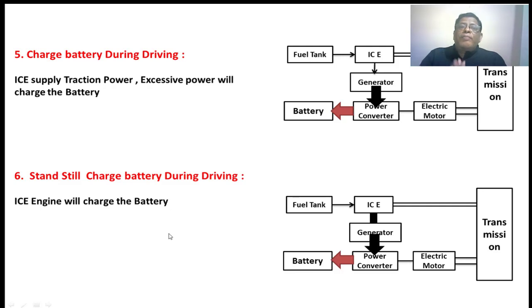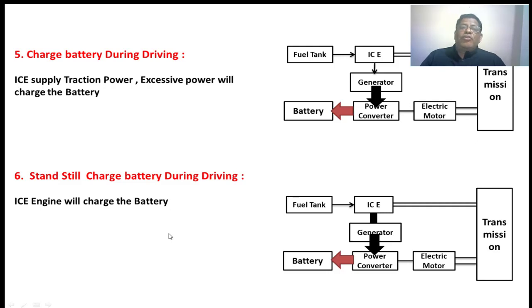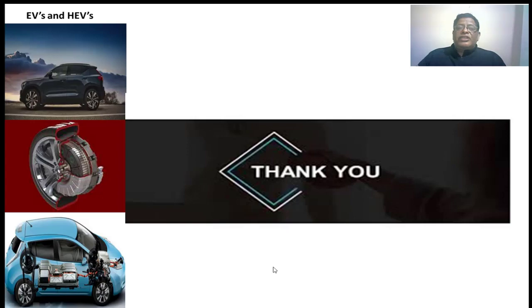In this manner, the different modes of operation during the series-parallel hybrid vehicle have been studied — one is the IC engine dominated, whereas the other one is the electric motor dominated. Thank you very much. We'll see you next time.